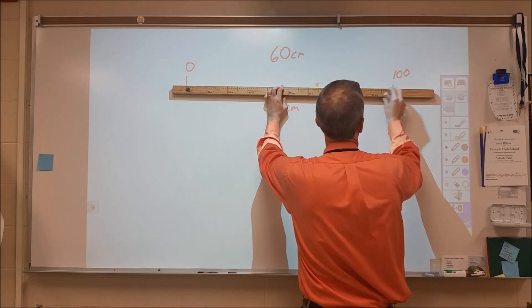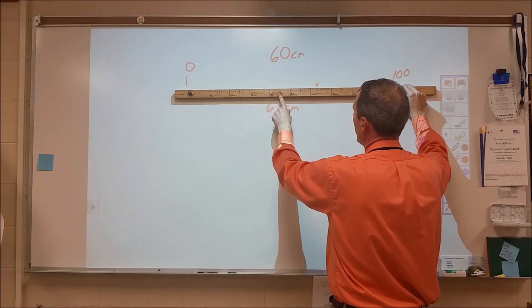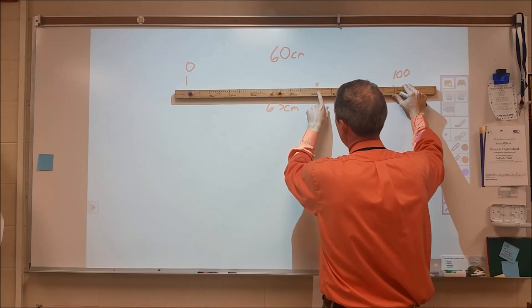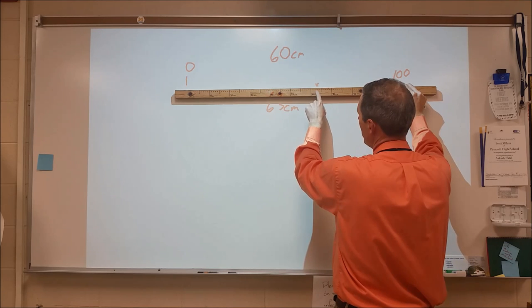I have one more board here. It's the same as the others. It starts at zero over here and ends at a hundred over here. And this one has every one centimeter marked. And so now I can see the red dot in the exact same spot as before, but I see here that it's sixty, sixty-one, sixty-two, sixty-three.